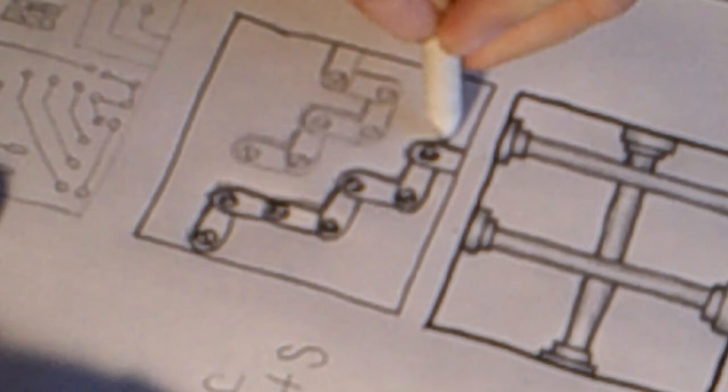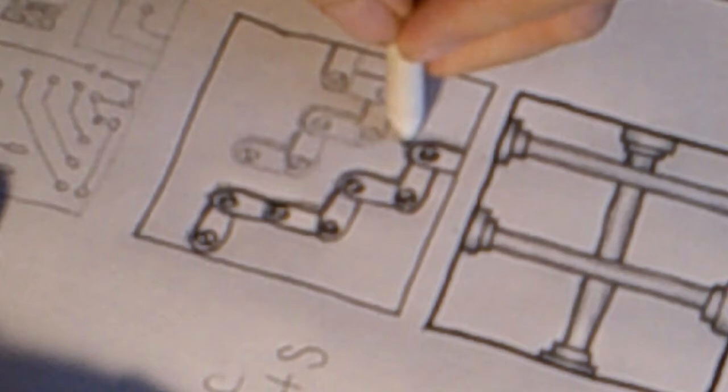And then a little more, a little blending with your paper stump. Get rid of the pencil lines.